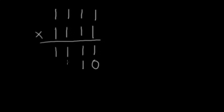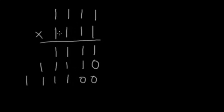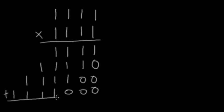We have 1111 for the second row. Then put two zeros to hold that place value and we have 1111 again. For the fourth row, put three zeros and then 1111. Now getting to the addition: 1 plus 0 plus 0 plus 0 is 1. Then 1 plus 1 is 0 and we carry the 1. Now we're getting to some difficult stuff — 1 plus 1 is 0 carry the 1.